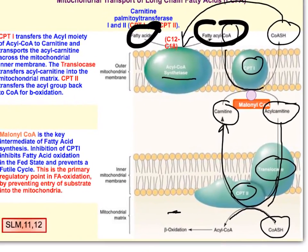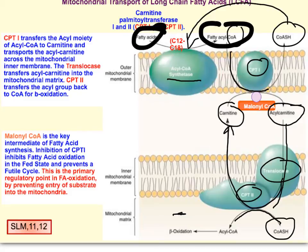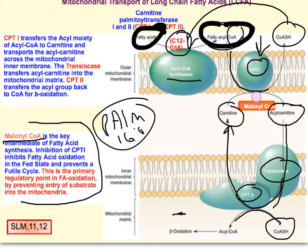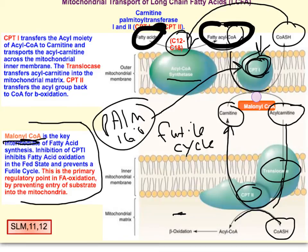When a cell is synthesizing fatty acids, an intermediate called malonyl-CoA is produced. Malonyl-CoA allosterically inhibits CPT-1, preventing it from acting on fatty acyl-CoA. This is important because palmitate, the primary product of fatty acid biosynthesis, is 16 carbons long. If CPT-1 were not stopped, you would be building and breaking down fatty acids simultaneously, creating a futile cycle. Malonyl-CoA prevents this futile cycle by inhibiting CPT-1.